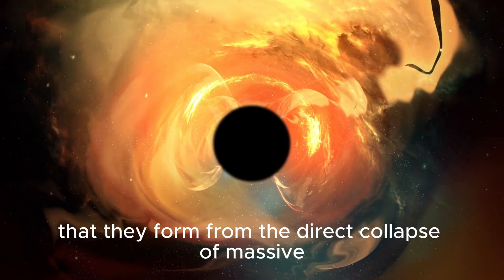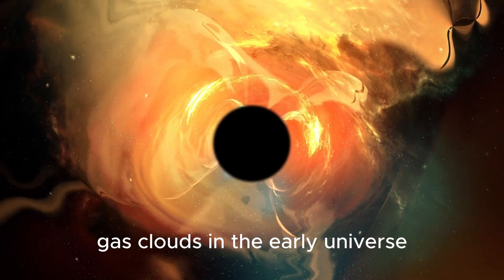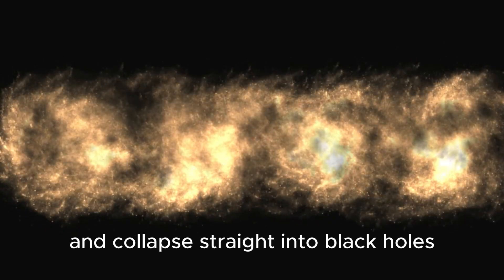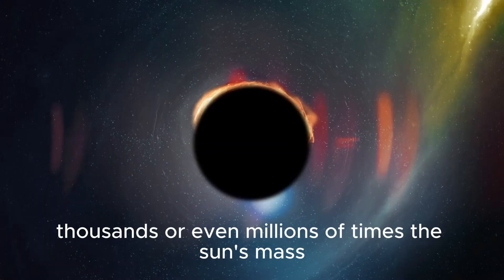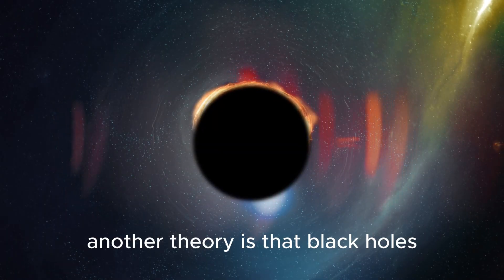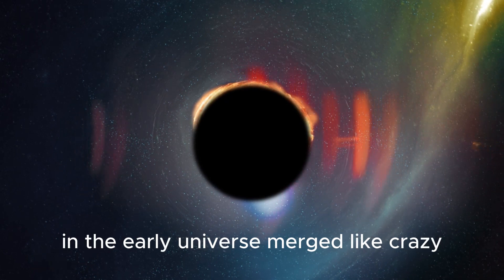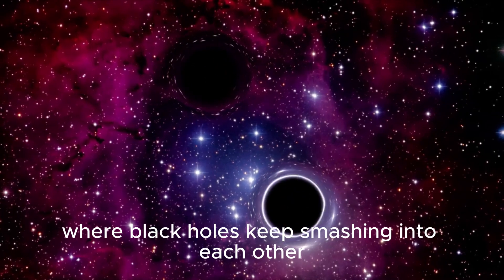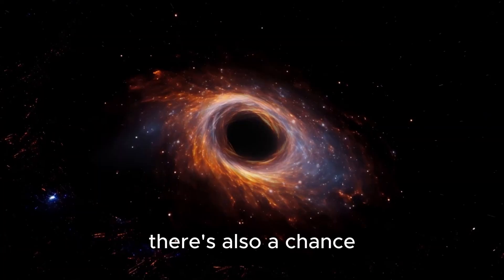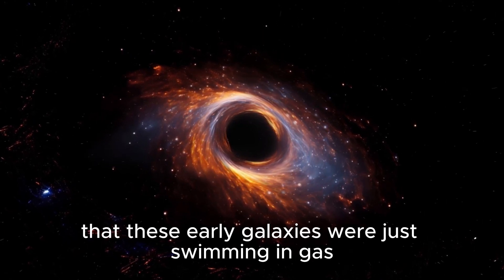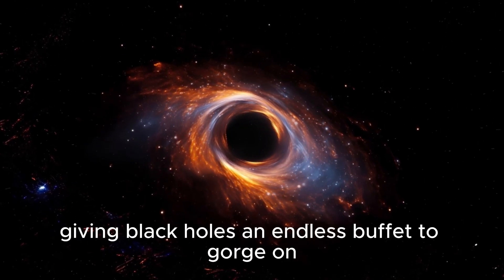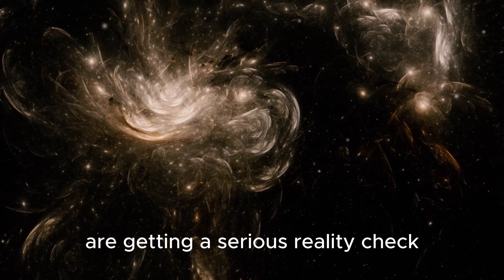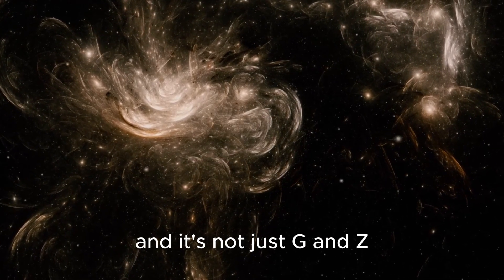This raises a huge question. How do supermassive black holes get so big so fast? One idea is that they form from the direct collapse of massive gas clouds in the early universe. These clouds could skip the star phase entirely and collapse straight into black holes, thousands or even millions of times the sun's mass. Another theory is that black holes in the early universe merged like crazy. Imagine a chaotic cosmic mosh pit where black holes keep smashing into each other, combining their masses in record time. There's also a chance that these early galaxies were just swimming in gas, giving black holes an endless buffet to gorge on. Whatever the case, our models of black hole growth are getting a serious reality check.